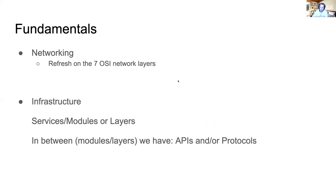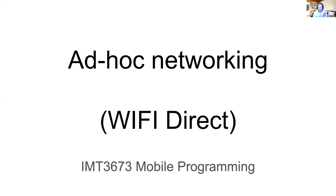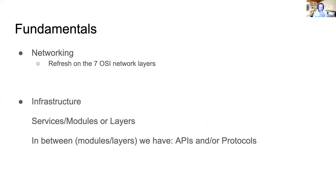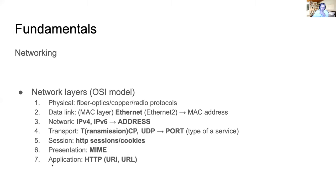Today we'll talk about networking done in such a way that it doesn't require infrastructure. First, a quick refresher: we have the networking stack and those seven OSI layers, which we covered in the cloud programming course and in the networking course. These form fundamental concepts we need to understand. The layers go from one to seven.